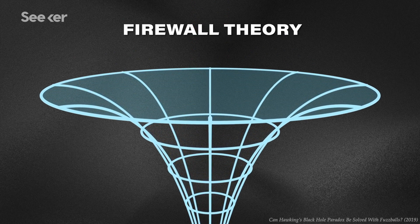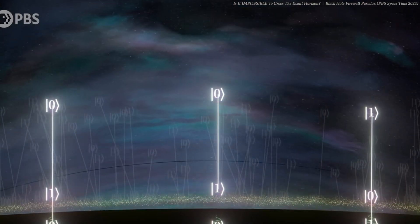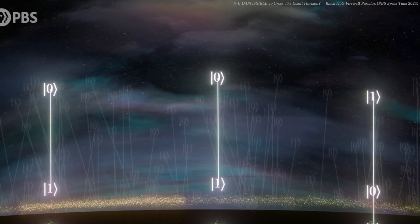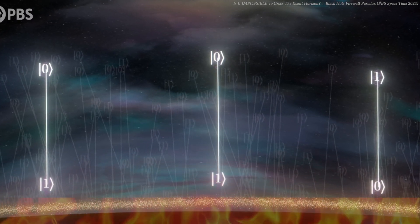At the event horizon, there exists a firewall of high-energy particles that severs the entanglement between the interior and exterior of the black hole. This firewall would incinerate anything crossing the event horizon, resolving the entanglement paradox, but at a tremendous cost. The consequences for infalling observers are horrifying. Instead of a gentle descent into the unknown, they face a barrier that burns them to a crisp.